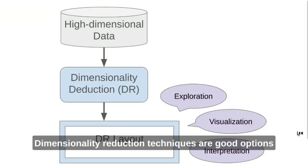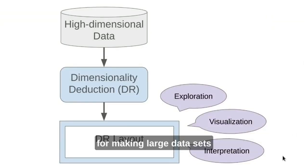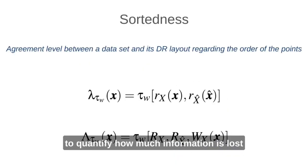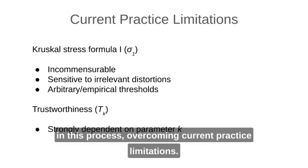In addition, dimensionality reduction techniques are good options for making large datasets interpretable. We propose the concept of sortedness to quantify how much information is lost in this process, overcoming current practice limitations.